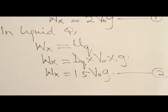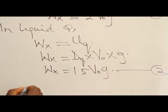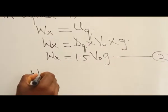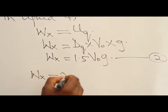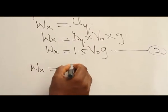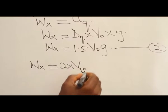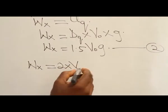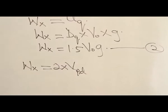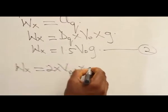If I alter equation 1, it becomes weight of object X equals 2 times volume of liquid P displaced times G.